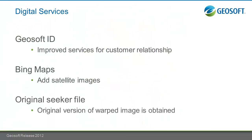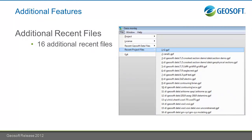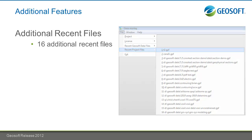We've also added the ability to get the original version of a warped image through Seeker, with no windowing, reprojection, or resampling. A number of additional features have been added, including being able to add up to 16 additional recent files within your workspace. This is helpful for clients working on large projects, working between one and another project, consulting on many — it keeps you organized and helps you with your day-to-day work.